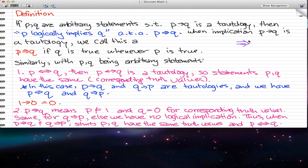When P logically implies Q, that is when implication P implies Q is a tautology. And we call this logical implication. We call this a logical implication, and P logically implies Q.